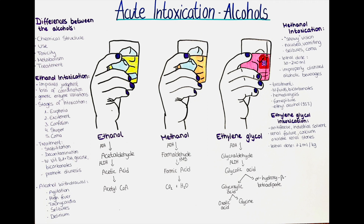The fourth difference is the metabolism. Ethanol is metabolized primarily in the liver through a series of chemical reactions that convert it into acetaldehyde and then into acetic acid, which can be used by the body for energy. Methanol and ethylene glycol are also metabolized in the liver, but they are converted into toxic substances that can cause damage to various organs.